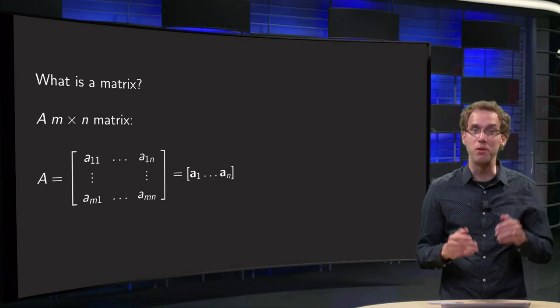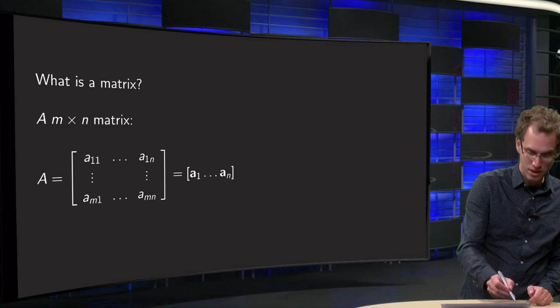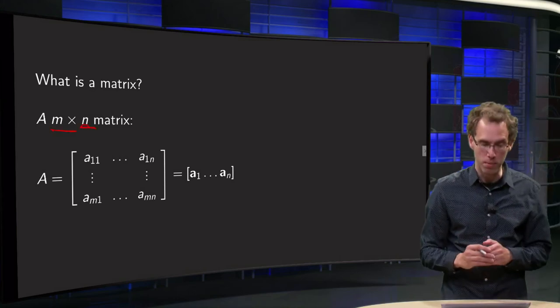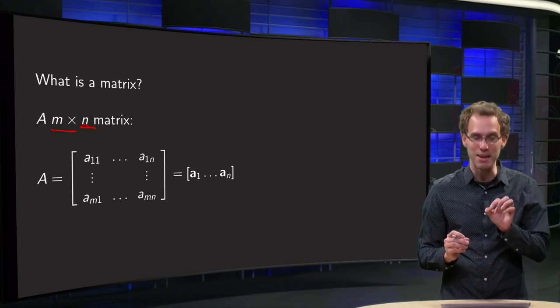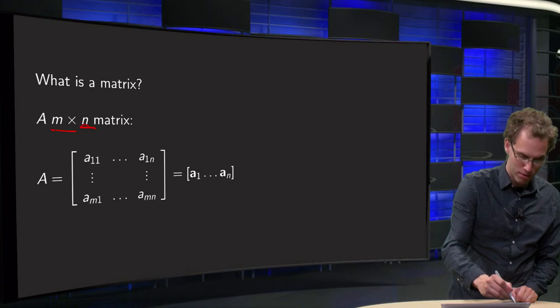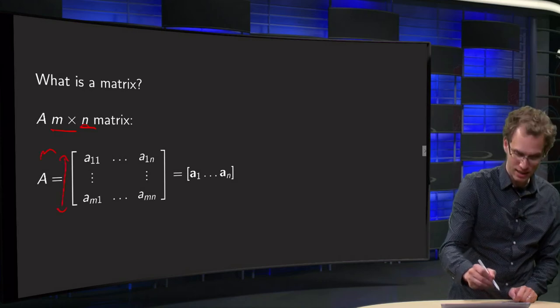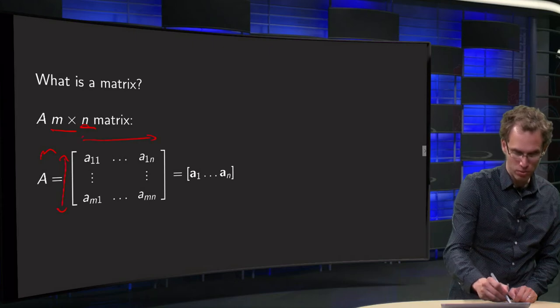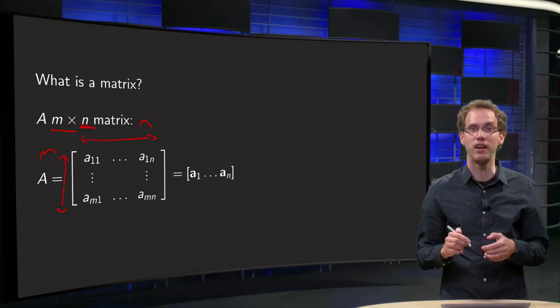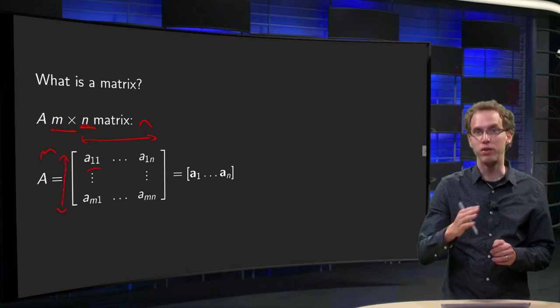Well, a matrix for us for now is a rectangular array of numbers. A is called an m times n matrix, where the m, the first one, relates to the height of the matrix and the n, the second one, to the width. And then we denote all the numbers in the array. We start here with a11 and then we continue to the right, a12, a13 up till a1n, that's what's called the first row of the matrix.